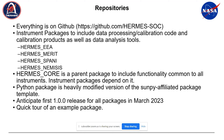We have everything on GitHub. You can just go to Hermes-SOC right now and see what we have. The current structure is that we have instrument packages for each of our individual instruments. You can see them all here: EEA, Merit, Spani, and Nemesis. Then we have a top-level parent package that they all depend on, which will include functionality common to all — they will all depend on this Hermes Core.